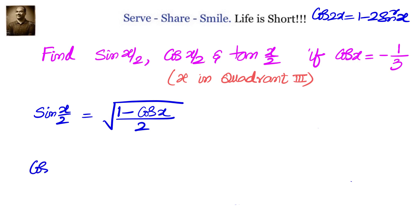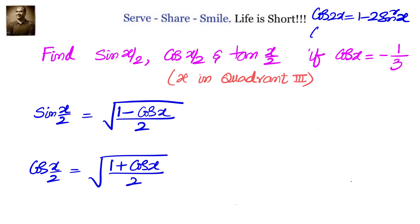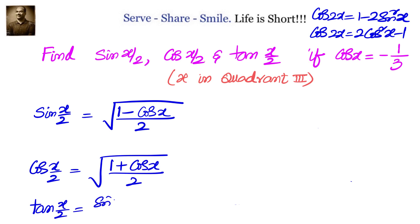Similarly, cos(x/2) equals the square root of (1 + cos x) divided by 2. This formula is derived from cos(2x) = 2cos²(x) - 1, giving cos(x) = square root of (1 + cos(2x))/2, and at the next level cos(x/2) = square root of (1 + cos x)/2. For tan(x/2), we don't need a separate formula — we can directly write it as sin(x/2) divided by cos(x/2).